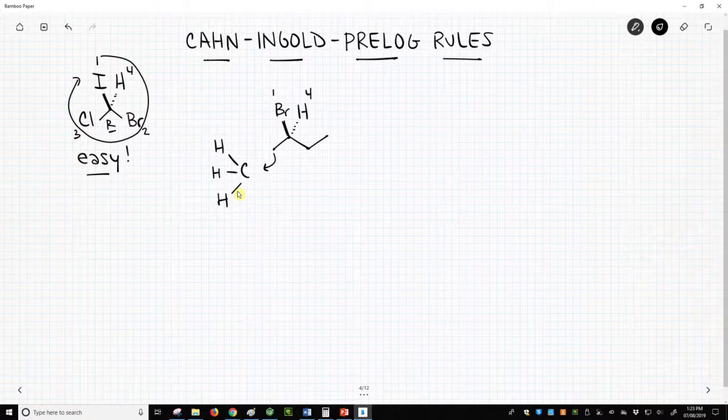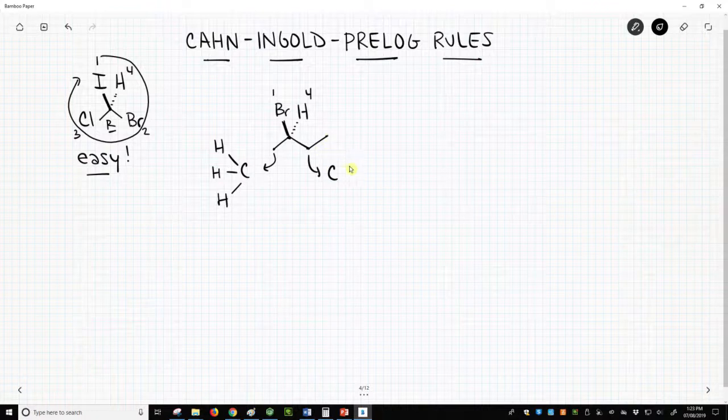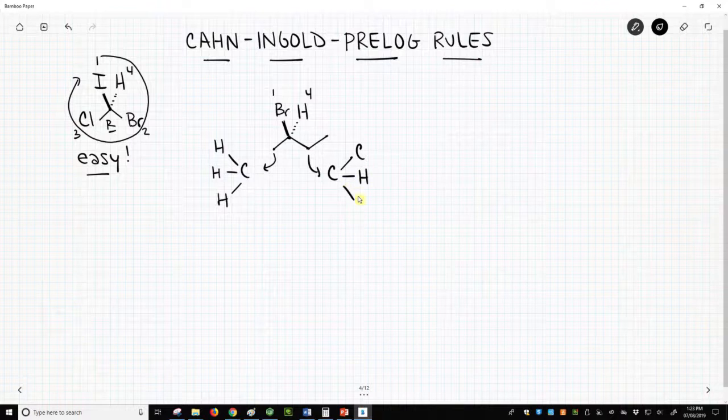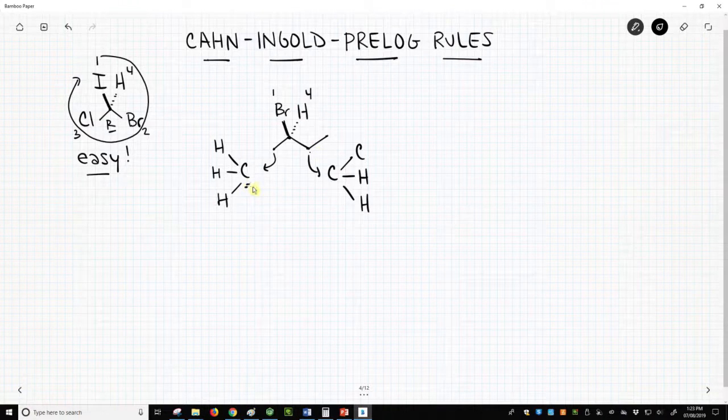Now this carbon is itself attached to three additional groups as we move away from our stereocenter. This carbon is attached to another carbon and a hydrogen and another hydrogen. And of course, those aren't written according to line angle notation, but they're there and we need to recognize that they're still there. At this point, these two carbons face off.